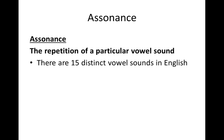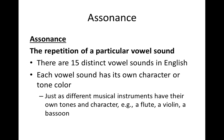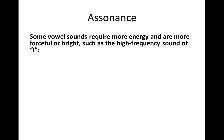One technique is that of assonance. Assonance is the repetition of a particular vowel sound. In English, we have 15 distinct vowel sounds, and each one has its own character or tone color — in the same way that a different musical instrument would have its own tone and sound to it.